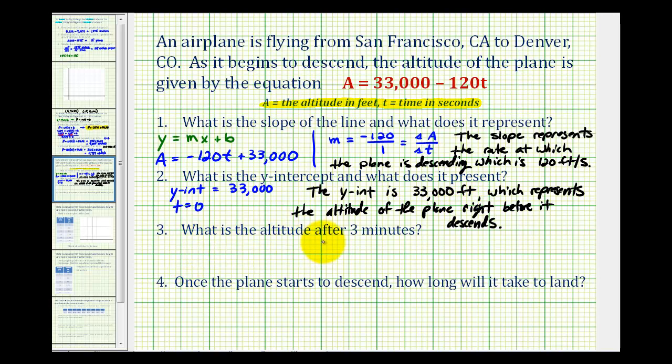Number three asks, what is the altitude after three minutes? Well, again, we're given the equation that tells us the altitude when T is time in seconds. So the one thing we have to be careful about here is that the time is given in minutes, but the equation requires time in seconds. So we first need to convert three minutes to seconds, and since there are 60 seconds in one minute, we can see here that we're going to use T equals 180 seconds.